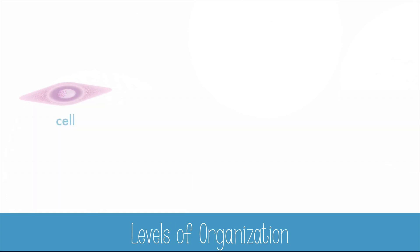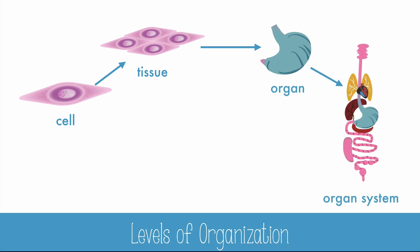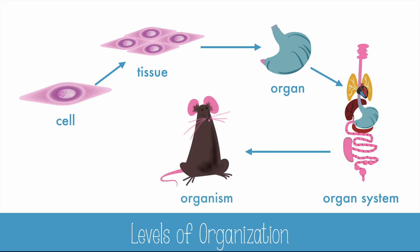The base level is the cell, like this smooth muscle cell. They gather and work together as tissue, which is part of an organ like the stomach, which is also part of an organ system like the digestive system, which is also part of an organism like this rat. The digestive system plays a role in getting nutrients so that other parts of the body won't have to worry about it.